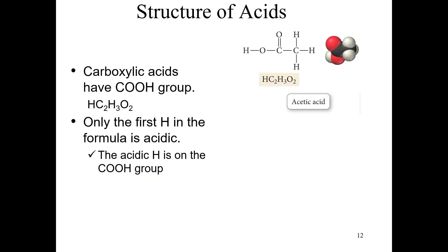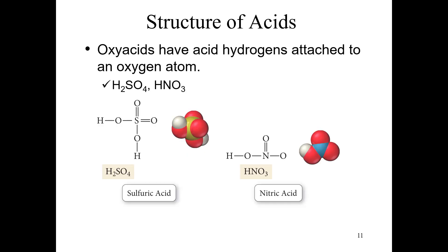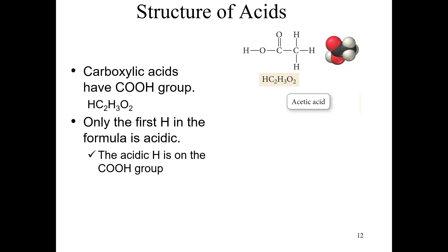We have another type of acid called the oxy acids. These have acid hydrogens attached to an oxygen atom. When we say an acid hydrogen, we mean the hydrogen that will be released or ionized when the acid acts as such. Here we have sulfuric acid and nitric acid — you can see where the hydrogen that is going to be released is attached to an oxygen. Notice that in the case of sulfuric acid we have two of them.